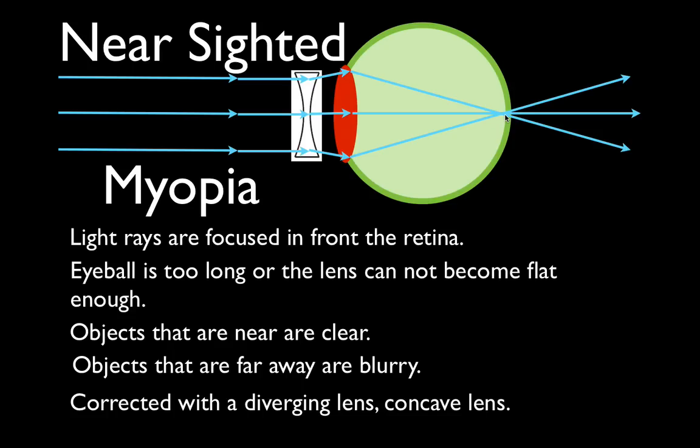That's all there is to it — nearsightedness and farsightedness, hyperopia and myopia, and the lenses used to correct them. Thank you for watching. I hope you found this straightforward explanation of the difference between farsightedness and nearsightedness helpful.